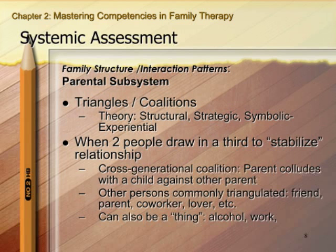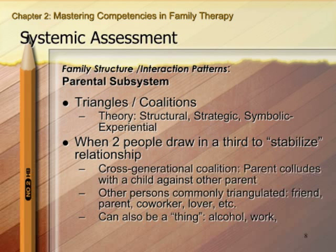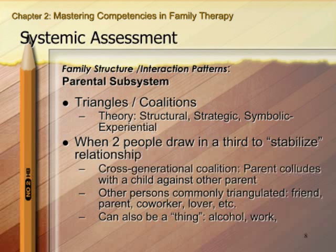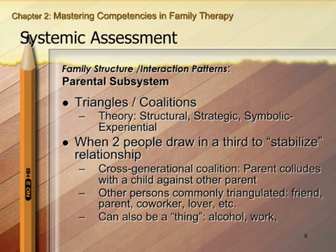If there are triangles functioning in the family, it's very important to identify them through case conceptualization and interrupt them as soon as possible because they can be very destructive. Other people can be easily triangulated in — a friend, grandparent, co-worker, or lover. If a dysfunctional triangle has developed, the person uses the outside relationship to stabilize things without going back to the original person to resolve differences. In step families and divorcing families, triangles are a primary area for intervention.